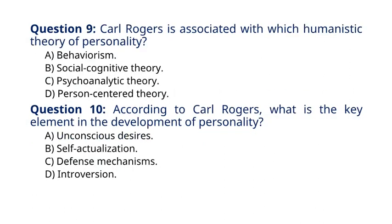Question 9. Carl Rogers is associated with which humanistic theory of personality? A. Behaviorism. B. Social cognitive theory. C. Psychoanalytic theory. D. Person-centered theory.